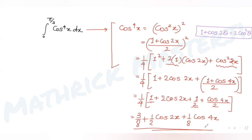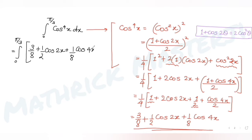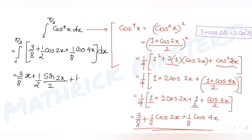Now integrating from 0 to π/3: ∫(3/8 + (1/2)cos2x + (1/8)cos4x) dx. Taking the integral: 3/8 is a constant giving 3x/8, integral of cos2x gives sin2x/2, and integral of cos4x gives sin4x/4. The limits go from 0 to π/3.